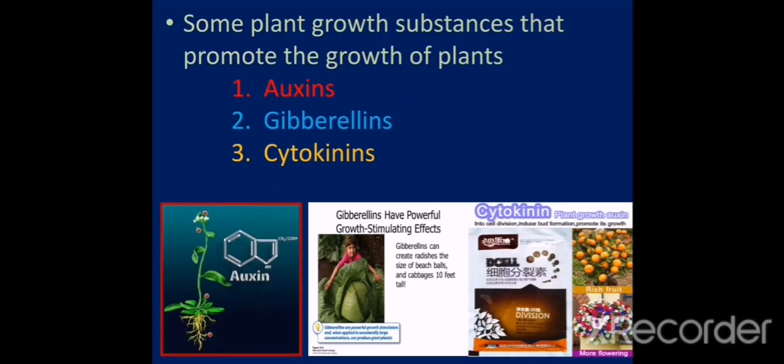Some growth substances promote the growth of a plant, while some inhibit the growth of a plant. Some plant growth substances that promote the growth of plants are auxins, gibberellins, and cytokinins. Under your grade 9 syllabus, we have to talk about these 3 chemicals. They are also known as plant hormones.